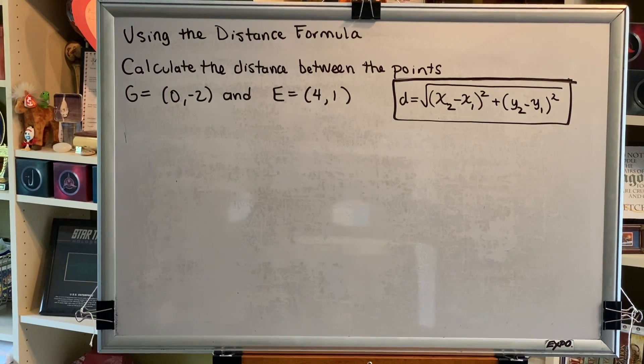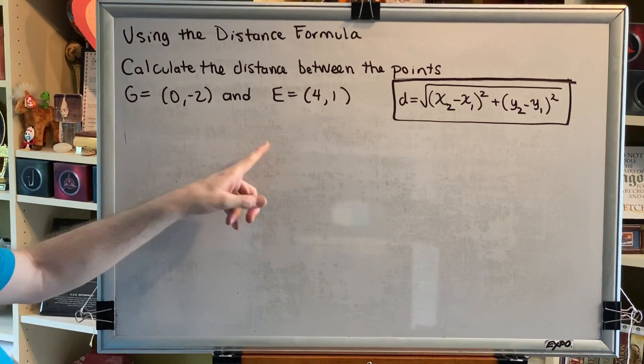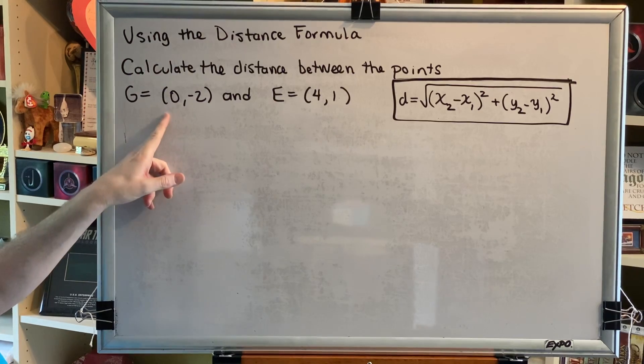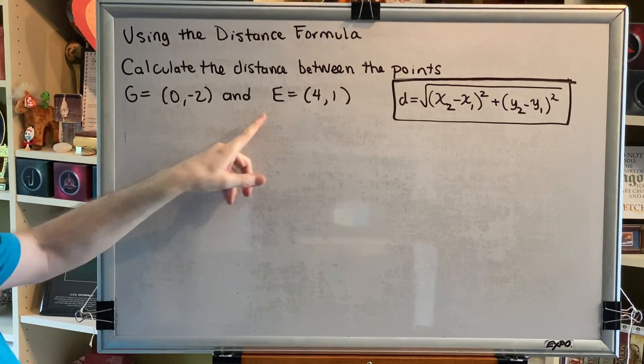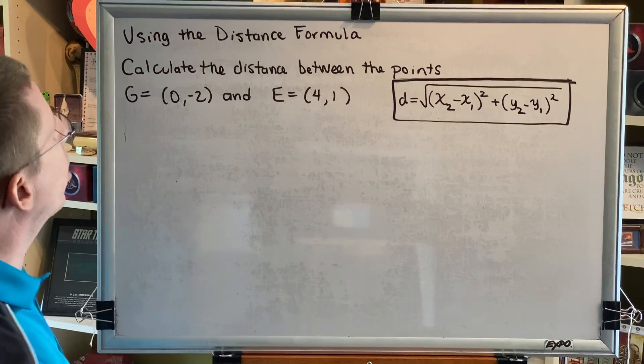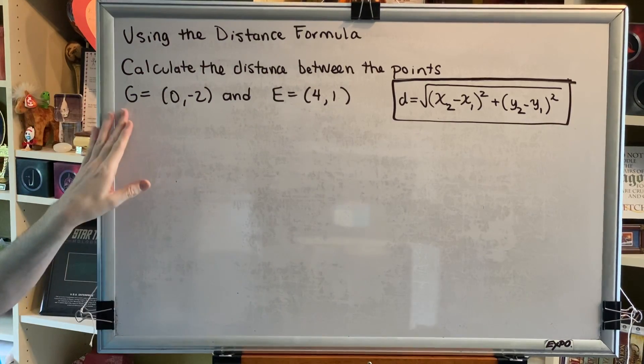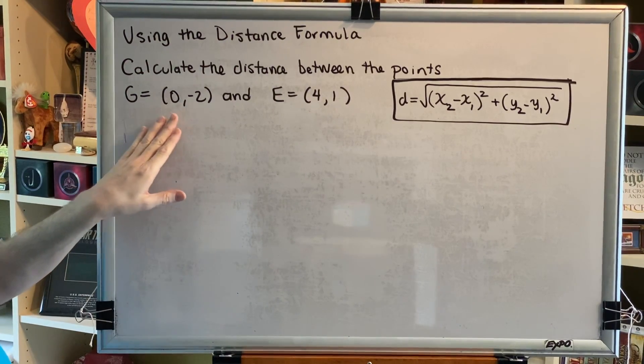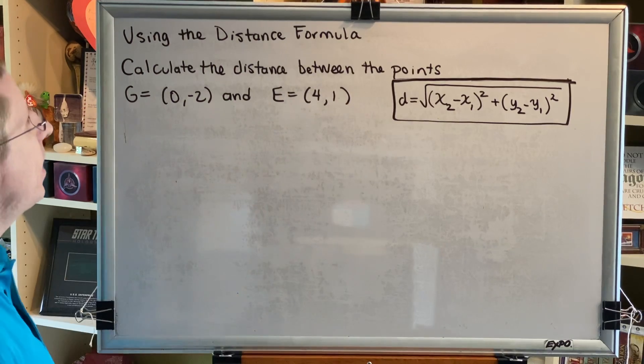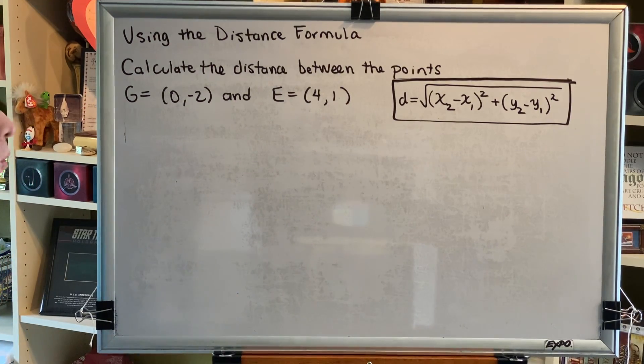The topic of this video is using the distance formula. Let's look at a problem. Calculate the distance between the points G and E. G equals (0, -2) and E equals (4, 1). We could also say that G has coordinates (0, -2) and E has coordinates (4, 1).